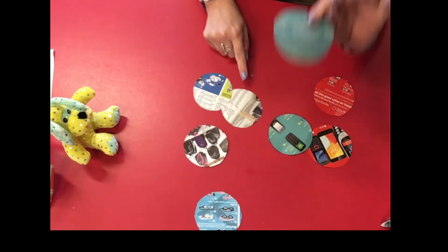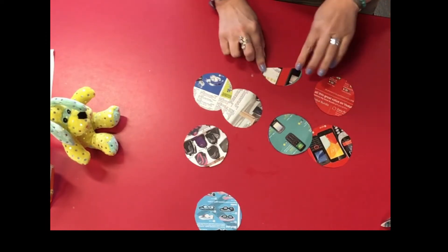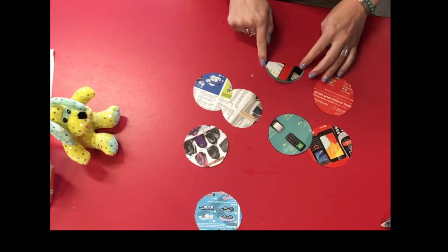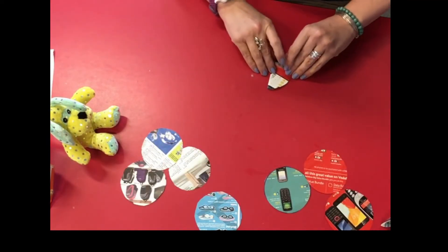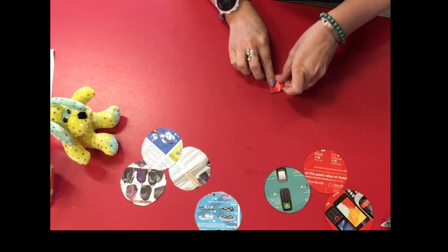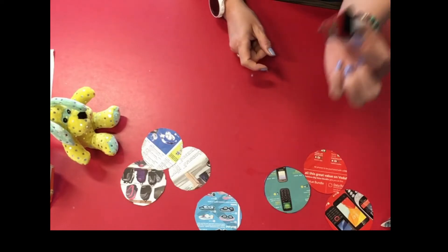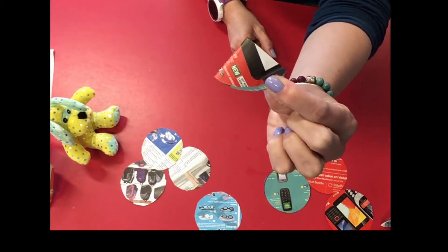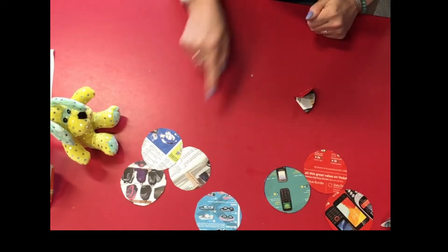So folding it in half, so it's half a circle now. And then you're going to fold it again so it turns into a quarter of a circle. So it's going to look like this, like a pizza slice. Okay, and you need to do that with all of your circles. Here we go.